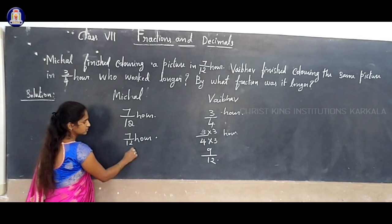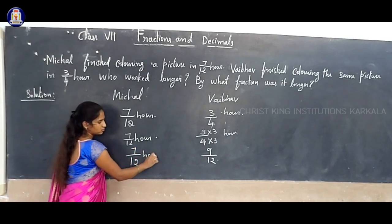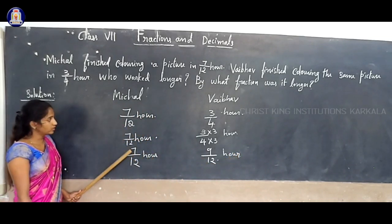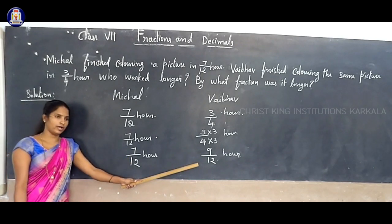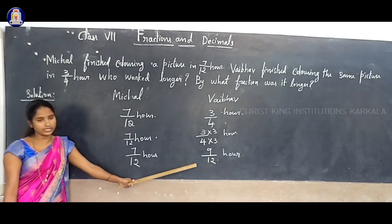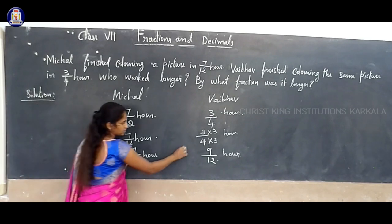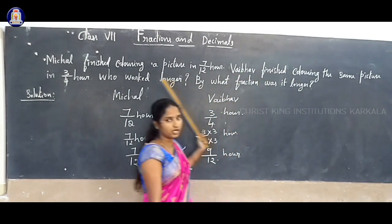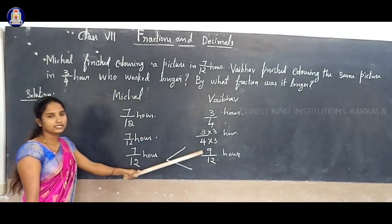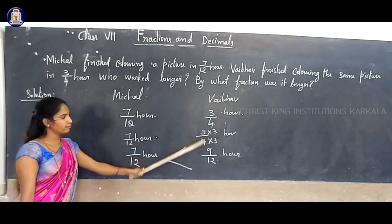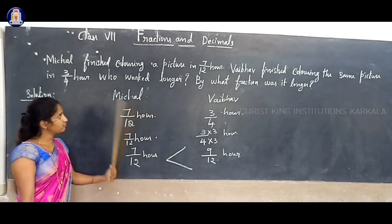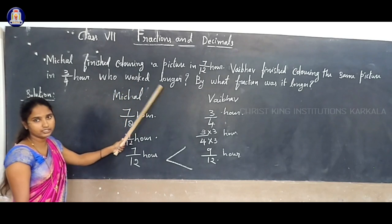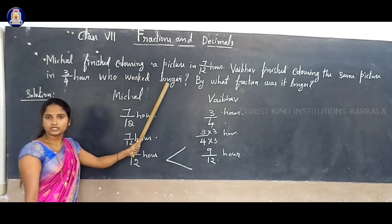Then already your denominator is 12, right? So now here denominator is 9/12. Now you can compare who worked longer: 7/12 versus 9/12 — which is larger? 9/12 is the larger, correct? So 9/12, that is Waibo. Waibo finished coloring the same picture in 3/4 hour, which equals 9/12. Therefore, we can say that Waibo worked longer.